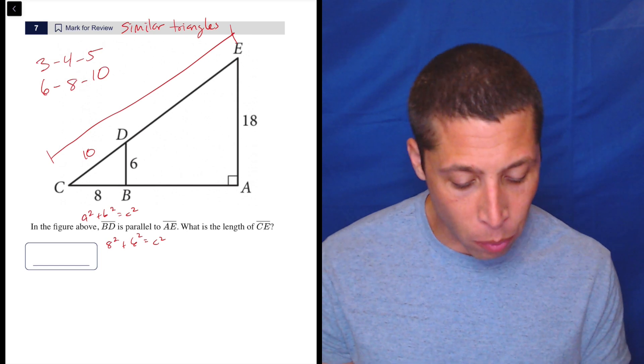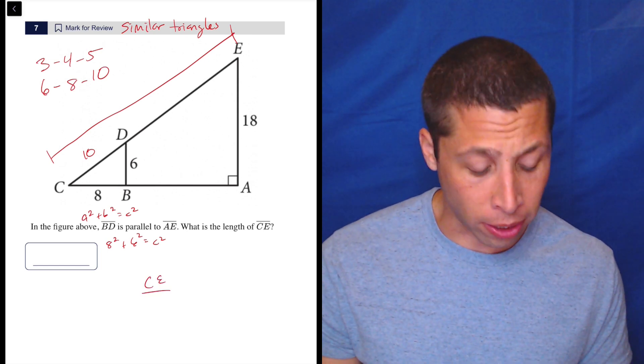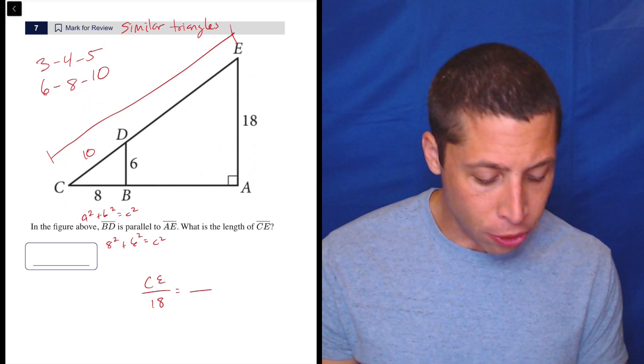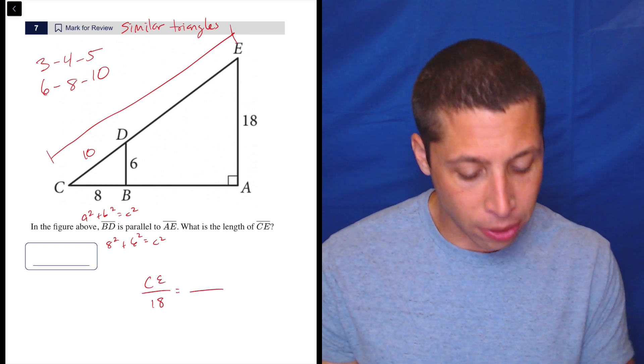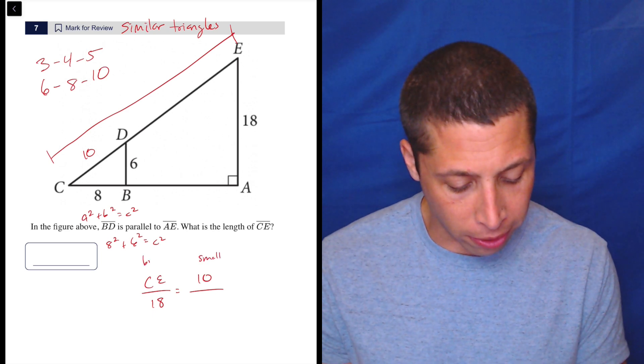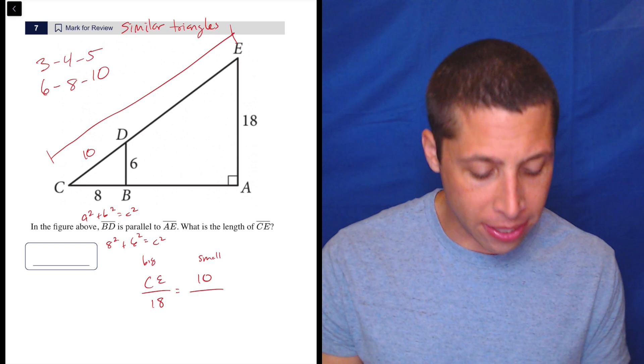Now we need to compare things. So we want to compare CE, which is part of the big triangle, to 18, the other part of the big triangle. And we can do that by saying the hypotenuse of the small triangle is 10. So small on the right, big on the left. And then what is the corresponding side to that 18? Well, it's 6.